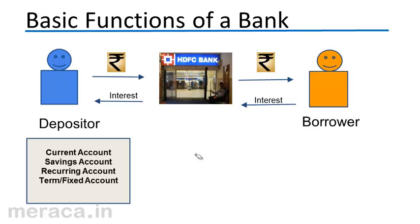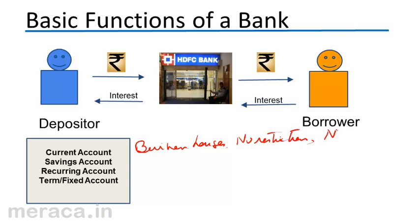Deposits are largely of three or four kinds, based on the rate of interest and, more importantly, the frequency of transactions. A current account is opened by business houses. There is no restriction on the number of transactions — there may be any number of deposits and withdrawals. However, the banks do not pay any interest on these deposits. These are largely opened by business houses.